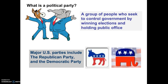What is a political party? It's a group of people who seek to control the government by winning an election and holding public office. Think about the two most common, widely known examples in the United States: the Republican Party and the Democratic Party. Most of what we see them do is efforts to win elections at different levels of government, and when they win those elections, they can hold that office — be that president, governor, mayor, or legislator — and control that part of the government.